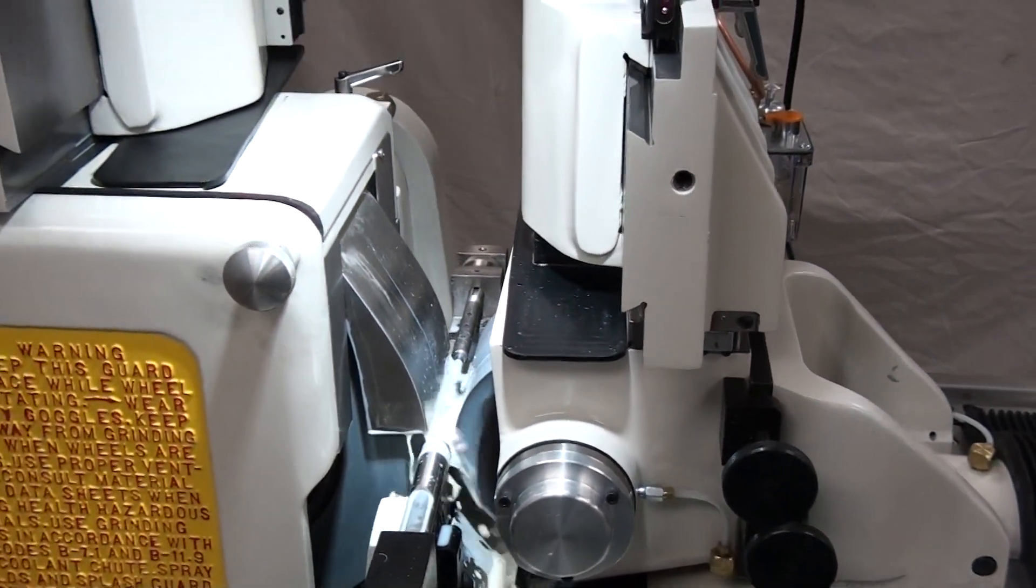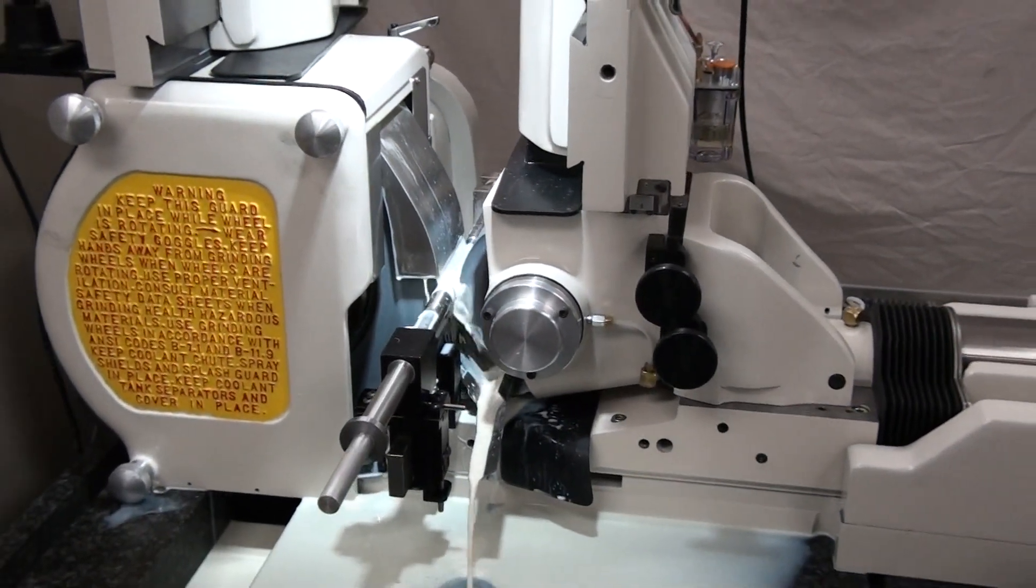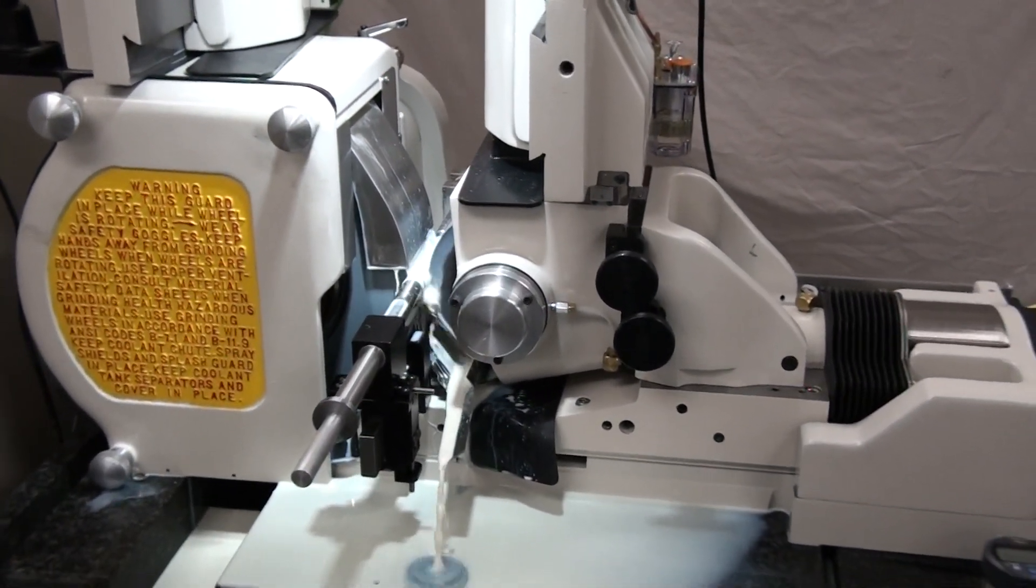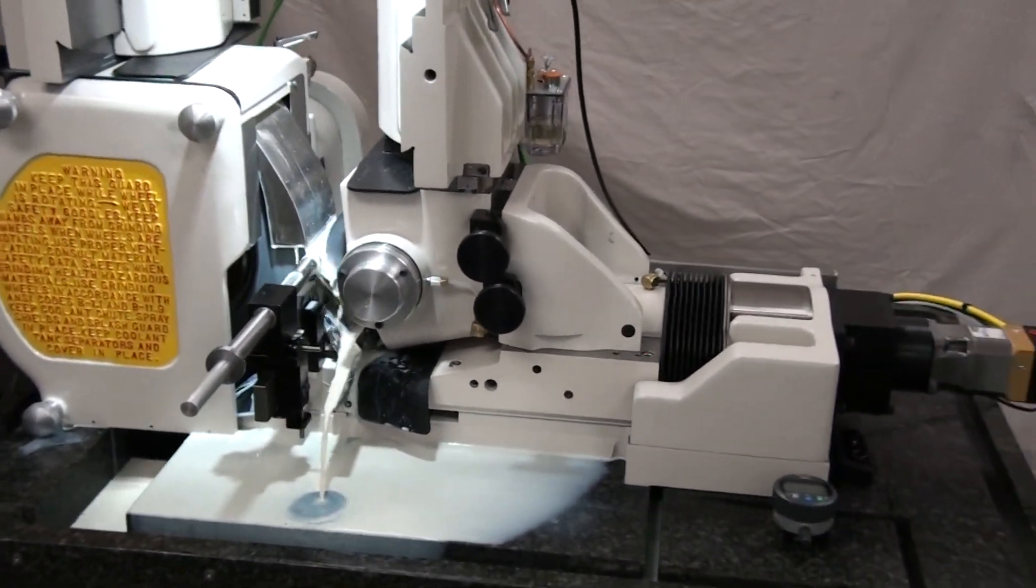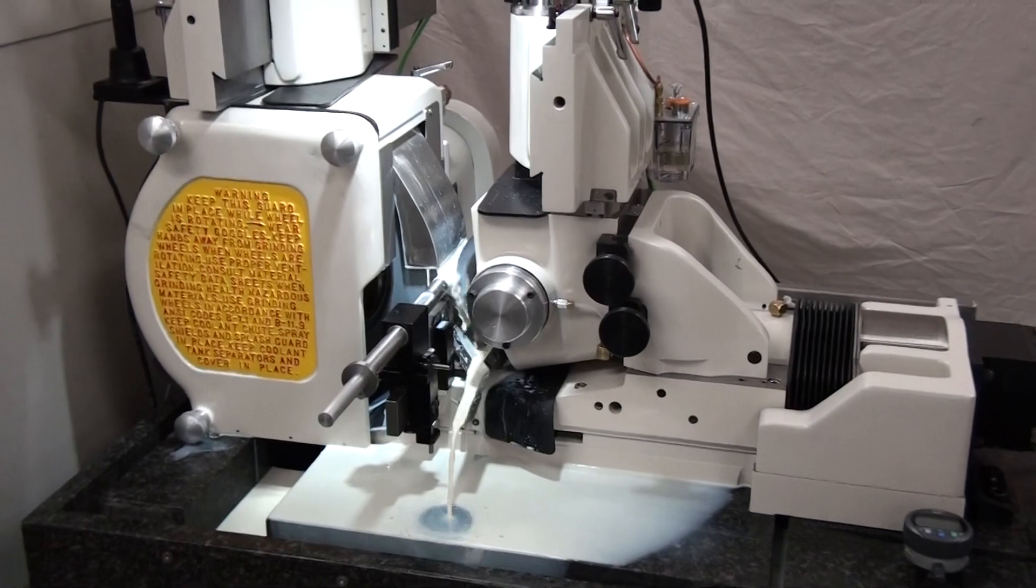When the grind is complete, the ram bed retracts and the part drops off the blade into a catch pan. A sweep cylinder extends and delivers the fresh ground part back to the operator for retrieval and inspection.